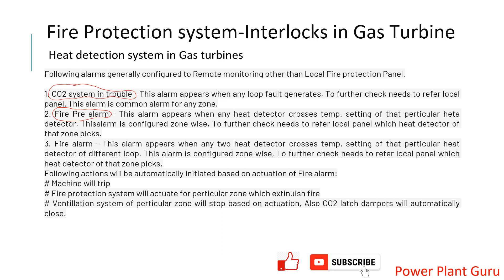The second alarm is 'fire pre-alarm,' which is a warning that fire conditions may be developing. For example, if there are two sensors in a zone — one set at 316°C and another at 300°C — and one sensor is crossing its limit but the other is not, you will get only a pre-alarm. This tells you that one sensor has triggered and the other may follow soon, so you can prepare, reduce load, or investigate why this is happening.